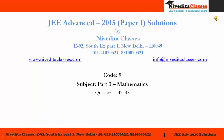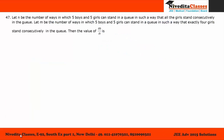Question number 47: let n be the number of ways in which 5 boys and 5 girls can stand in a queue such that the girls stand consecutively. Since the 5 girls are standing consecutively, the total number of arrangements is n = 6! × 5!.